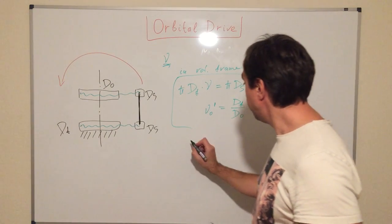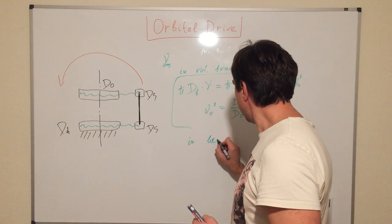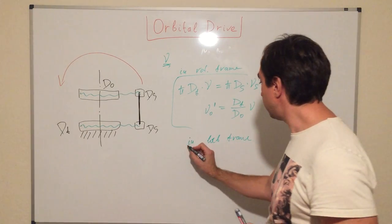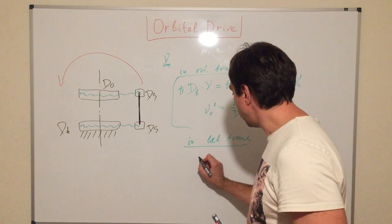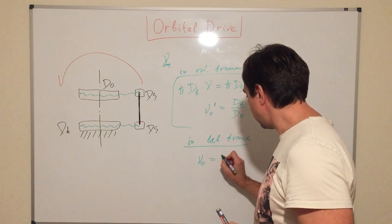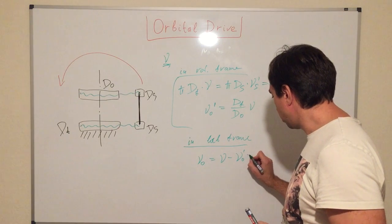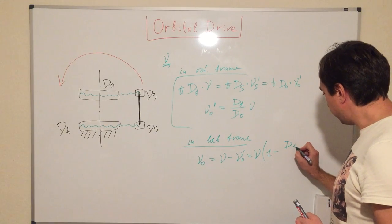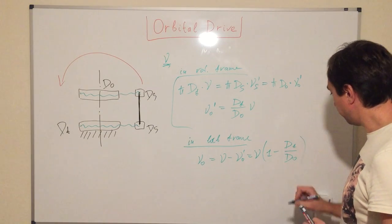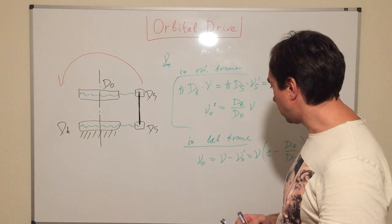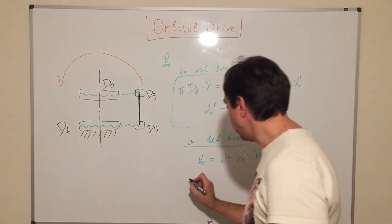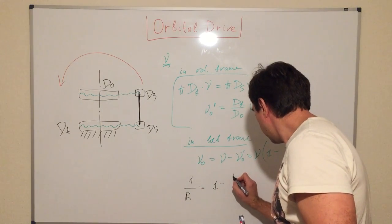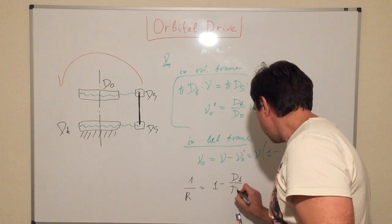Now let's go to the lab frame. And in the lab frame, the frequency of the rotation of the output pulley is going to be ν_output and it's going to be ν minus ν_output prime and it's going to be ν times (1 minus DF divided by D_output). And thus, we can compute that the reduction ratio, 1 over reduction ratio is going to be 1 minus DF divided by D_output.